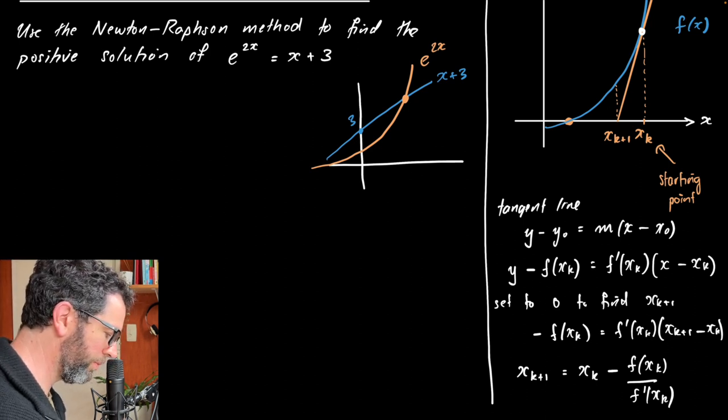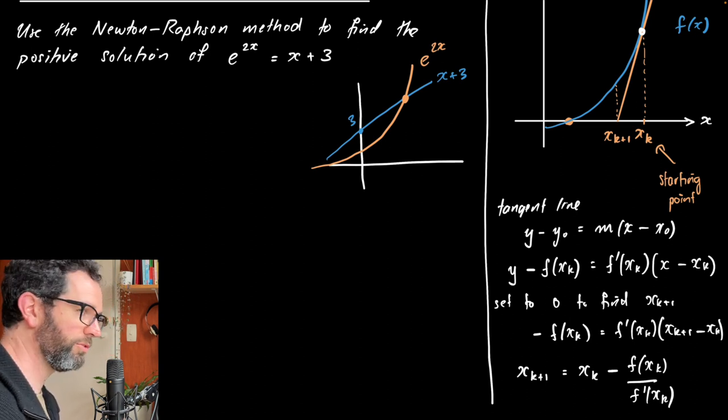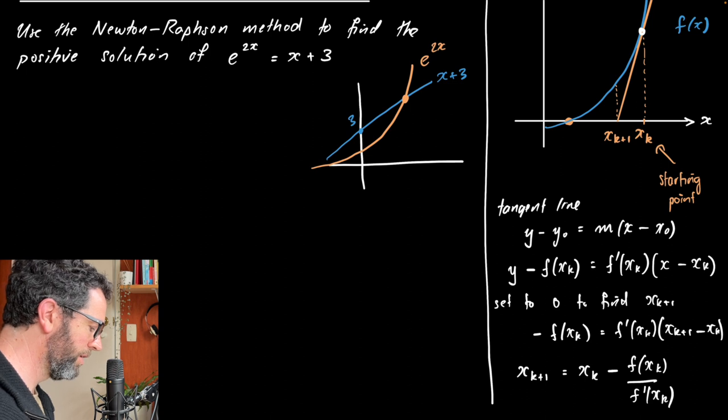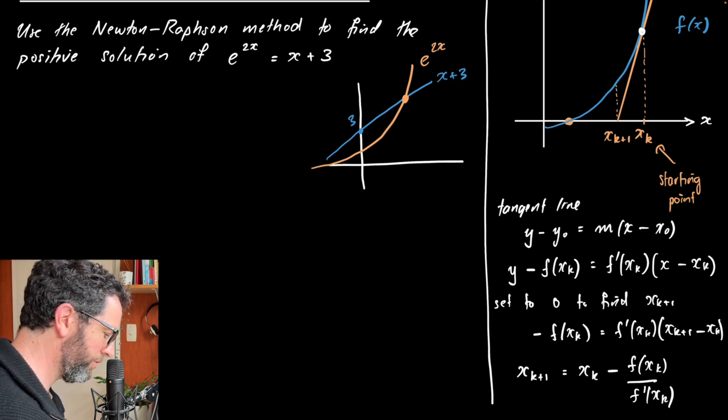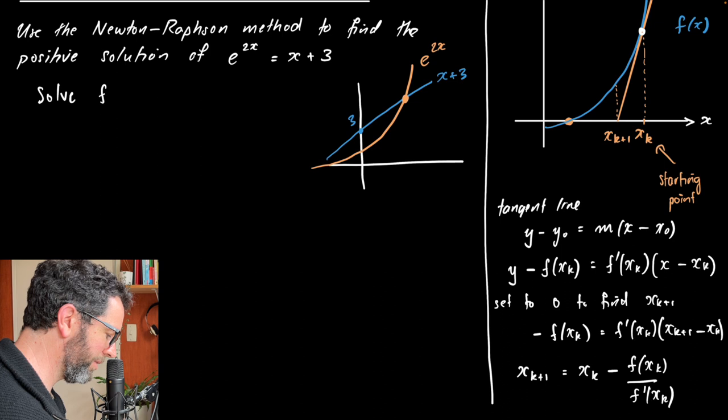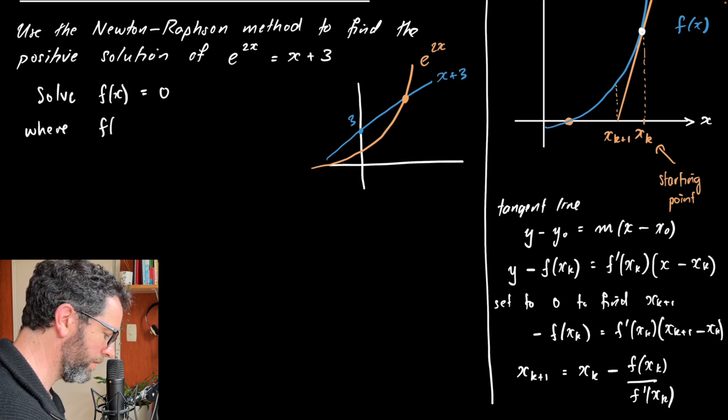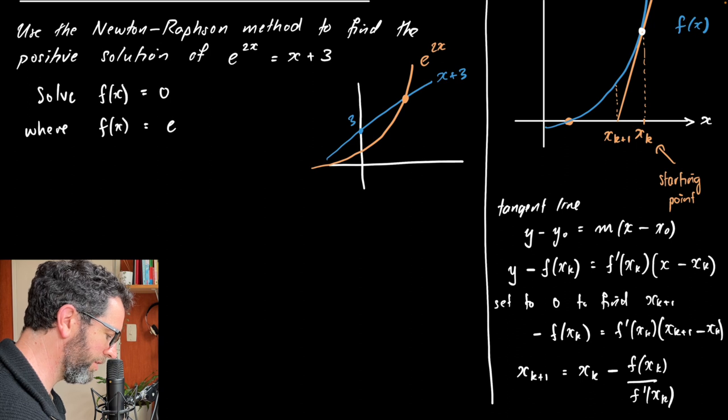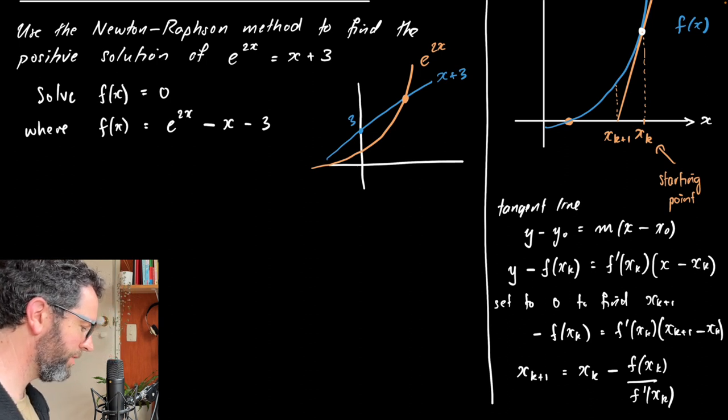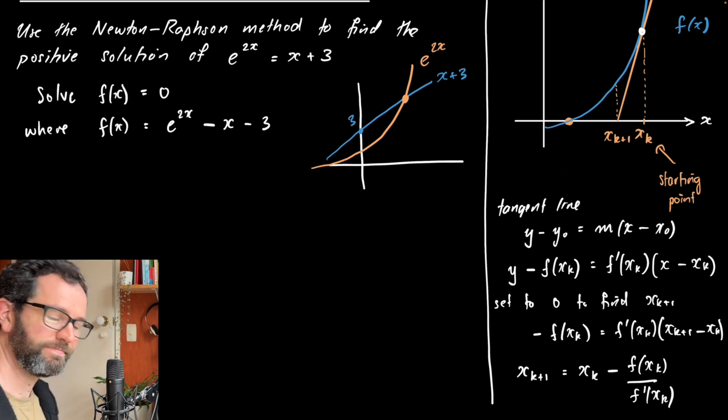And the other little problem we have is that our function is not currently in the form f of x equals 0, the problem we're trying to solve. So what we'll do is we will solve, we're going to have to just rearrange it slightly to make it an f of x that is 0 at the point 1. So solve f of x equals 0, where f of x, all we'll do is just make it one thing minus the other, e to the 2x minus x plus 3, which would be minus x minus 3. And if we can find out where that's 0, then that's the point that we're after.